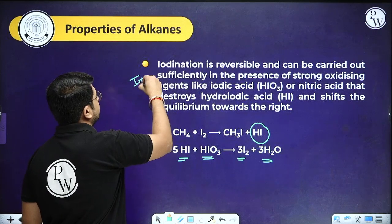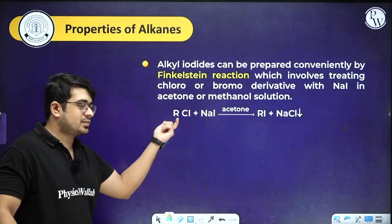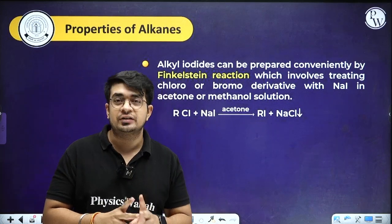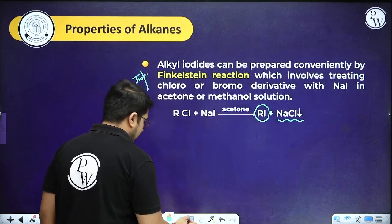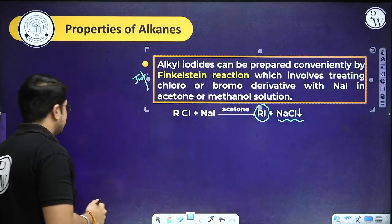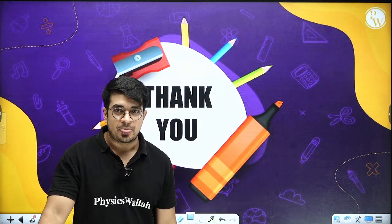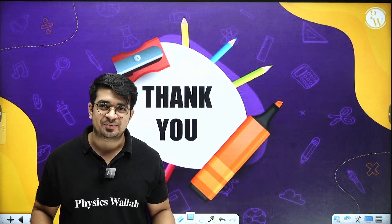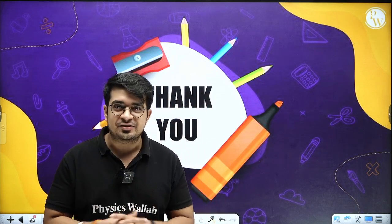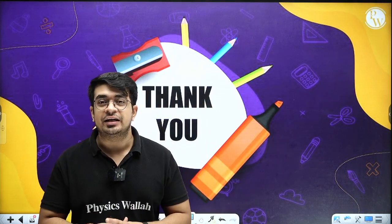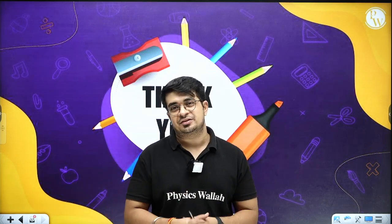The Finkelstein reaction involves RCl reacting with NaI to form RI and NaCl — a type of halogen exchange reaction with specific reagents, giving a very important type of product. We have now discussed all the chemical properties and preparation methods related to alkanes. In the next class, we will discuss preparation methods of alkenes and alkynes, which are easy, followed by their chemical properties, which are very important for NEET/JEE. That's all for this session — thank you.